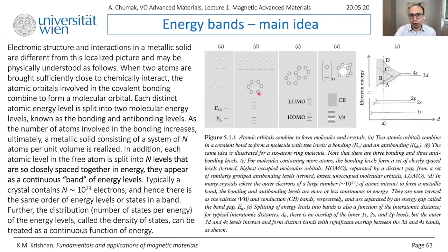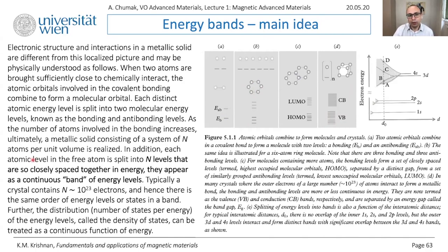If you put more atoms together, you will have as many energy levels as atoms. At the end of the day in a metal, where electrons move over the whole volume, you will have as many electron levels as electrons. You can estimate this using Avogadro's number — 10 to the power 23 — a huge number. This means the distance between energy levels is very small, and as a result we no longer describe our system with separate energy levels but instead work with bands.